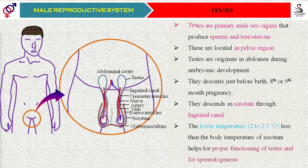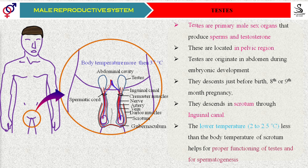Suppose you are not well and you are suffering with a particular disease — by that time your body temperature is going to rise above 37 degrees Celsius. When body temperature rises, the scrotum becomes loose and starts to help in keeping the testes a bit away from the abdominal cavity.